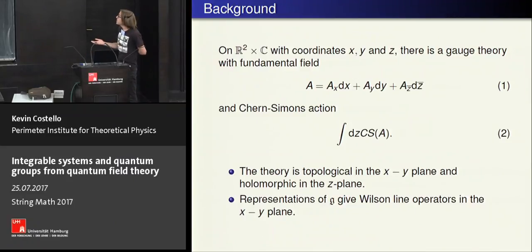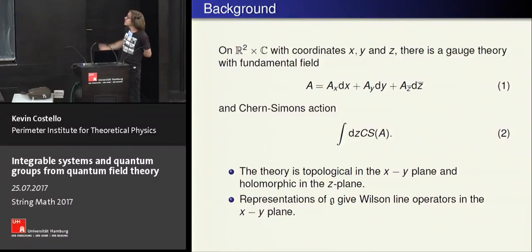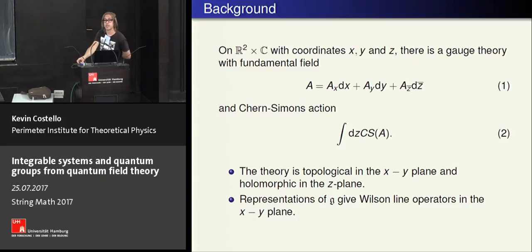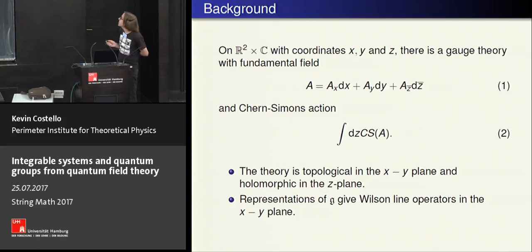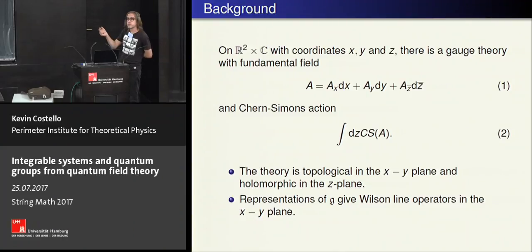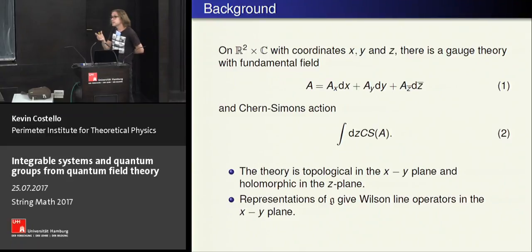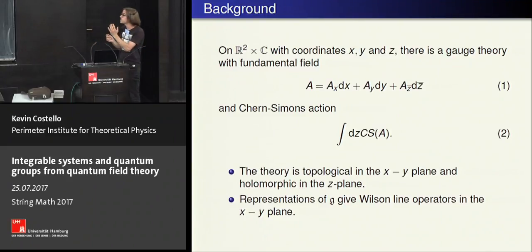If you give me a representation of the Lie algebra, which I use to build where my gauge fields live, I can use that to build a Wilson line, just like in ordinary gauge theory. However, because I don't have the z-component of the connection, I can't do parallel transport in the z-plane — I can only do it in the xy-plane. So these Wilson lines are constrained to live in two directions.